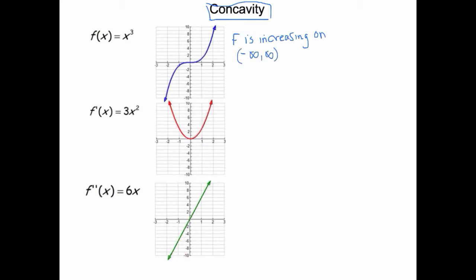Is that confirmed by the derivative's behavior? Let's go to the derivative, which is 3x squared, which I have graphed here. Is it true that the derivative is positive or zero on the interval negative infinity to infinity? Well yes — we can see that f prime is positive on the interval negative infinity to zero.